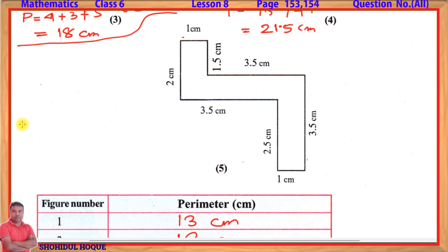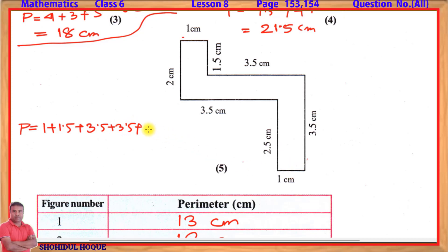Perimeter P equals: first side is 1, plus second side is 1.5, plus third is 2, giving 3.5. Plus 3.5. Plus 1 centimeter. Plus 2.5. Plus 3.5. Plus 2.